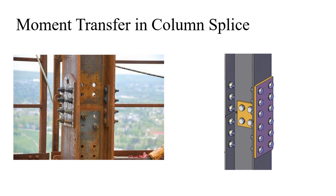For a column splice, the same principle applies. Some moment is applied and it is again transferred into push and pull — tensile force and compressive force. To make a single entity from part one and part two, we again put a plate connecting the two flanges — this is the flange for part two and this is the flange for part one — then put the bolts.